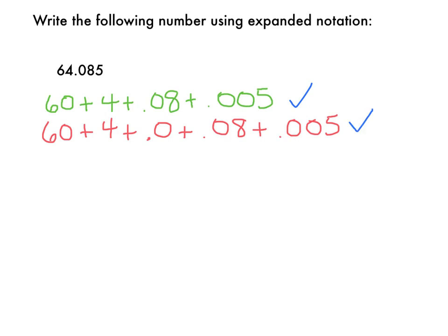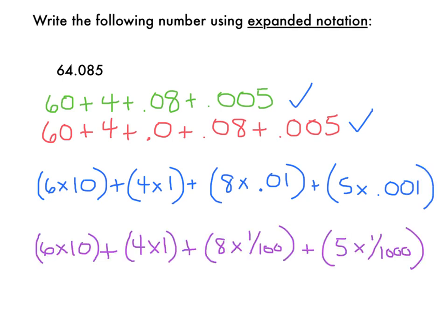I also, if you remember from the previous slide, could use decimals or fractions and write using parentheses. So I could do 6 times 10, to show the 60, plus 4 times 1, to show 4, plus 8 times 1 hundredth, plus 5 times 1 thousandth. I also could use fractions and record it in this way. All of these would be acceptable forms of expanded notation.